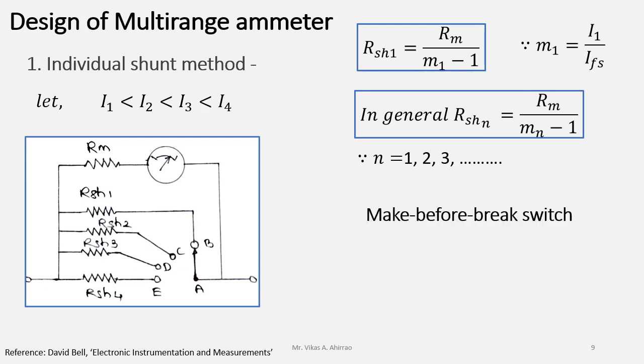Make before break switch. Whatever switch is being used in the case of individual shunt method, if you will use a simple switch, then that switch will take a small finite time to get switched from one position to another one or from one shunt to another shunt.